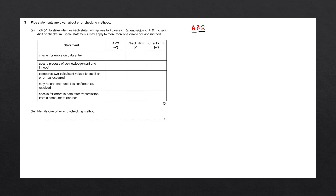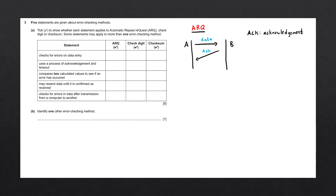Starting with ARQ — automatic repeat request — is an error checking method used on data transmission. When sending data from device A to device B, ARQ ensures that B receives the correct information. A sends a packet of data to B, and B uses another error checking method to verify if the data is correct. If B determines the data is correct, it sends back an acknowledgement, abbreviated as ACK. While B does this, A starts a timer, and if the ACK is received before the timer expires, A knows B has the correct information.